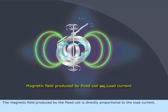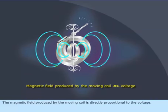The magnetic field produced by the fixed coil is directly proportional to the load current. The magnetic field produced by the moving coil is directly proportional to the voltage.